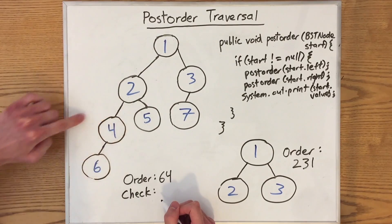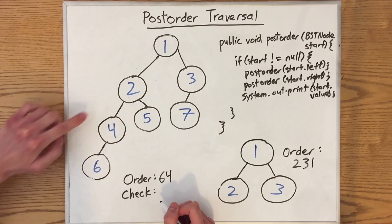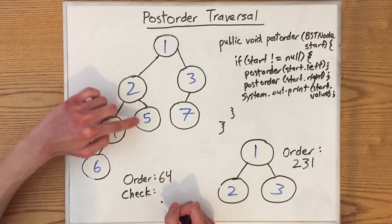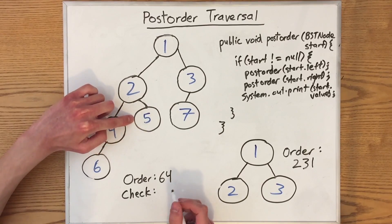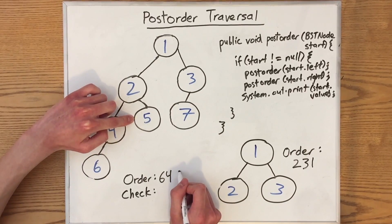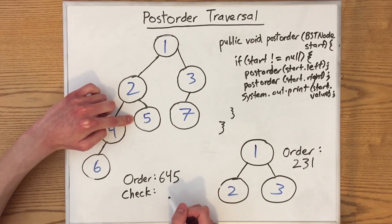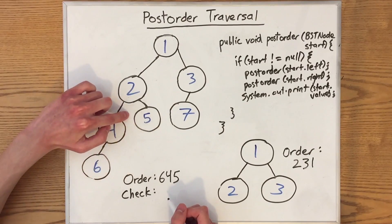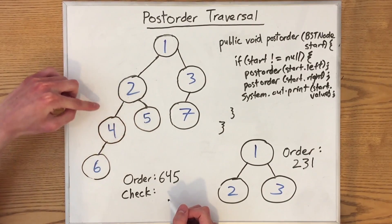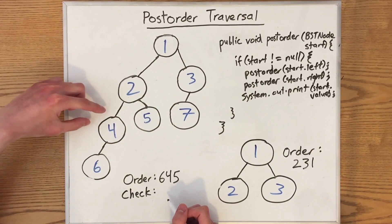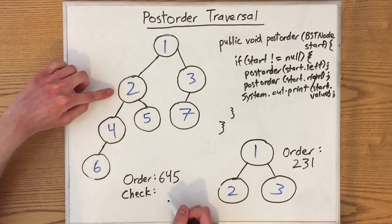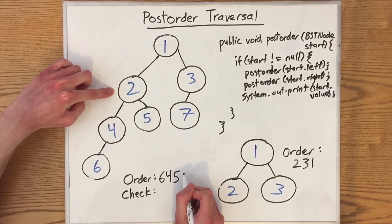Now the tree rooted at two has its left subtree complete. So we go into the right subtree of the tree rooted at this node. Since it's a single node, all we have to do is print out its value. Since it doesn't have any children, we're also done. So we finished recursively traversing through the left subtree and the right subtree, so now we print out the value of the root, which is 2.